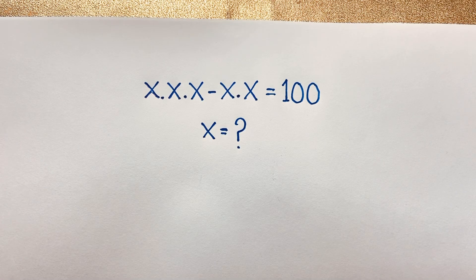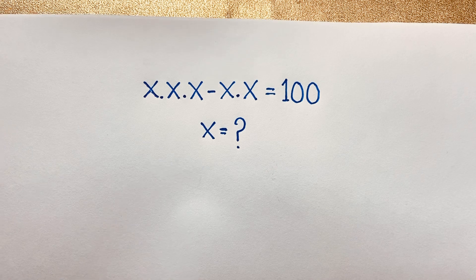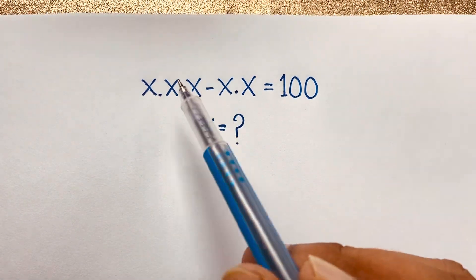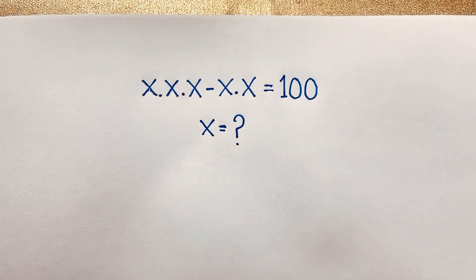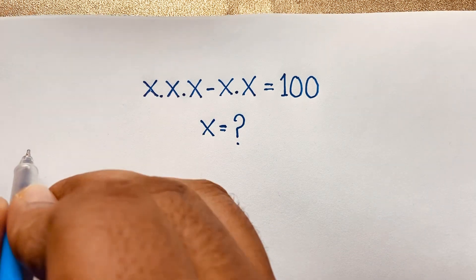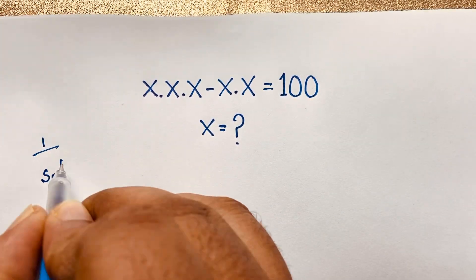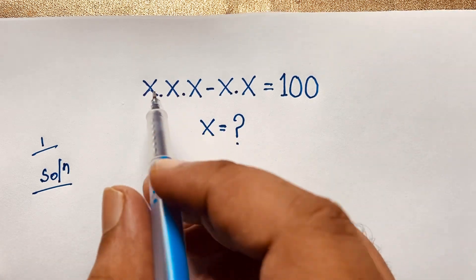Welcome to Russia's Classroom. Today we have solved an interesting cubic equation — a nice Olympic math question — which is x times x times x minus x times x is equal to 100. What is x? I will solve this question using two methods.